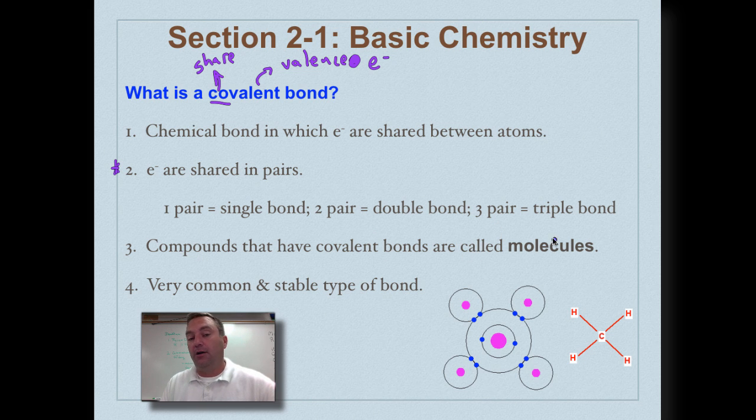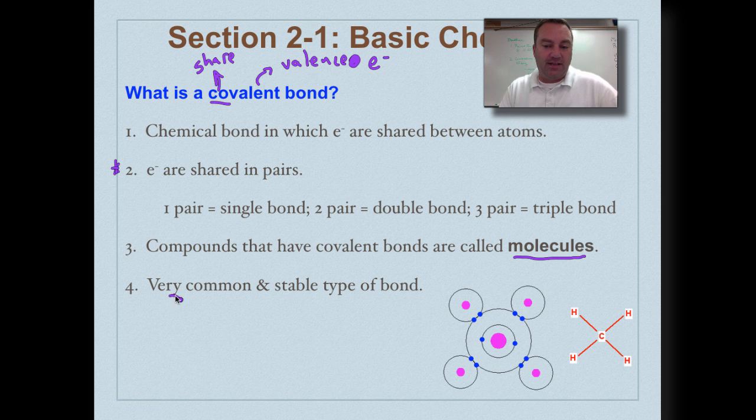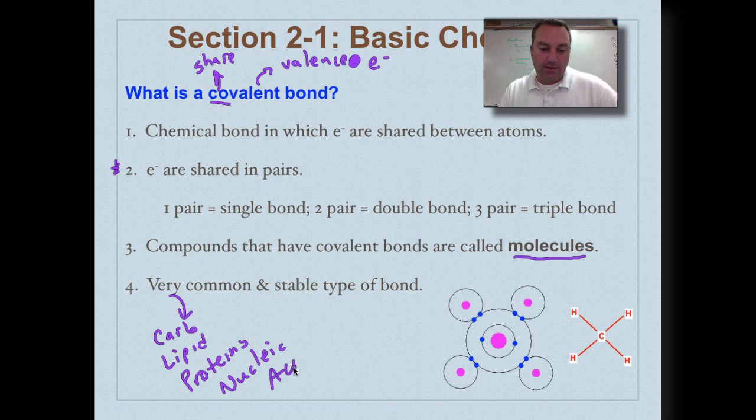Now, compounds that have covalent bonds are called molecules. Remember that cute girl in chemistry class that you'd want to share your notes with? Her name is Molly. Molly-cule. Share with Molly-cule. Get it? Now, these are very common in living things. So, things that are going to be made up of covalent bonds, think of carbohydrates, lipids, proteins, and nucleic acids, like DNA and RNA. Those are all made up of covalent bonds. So, covalent bonds, or molecules, are very common in your body.